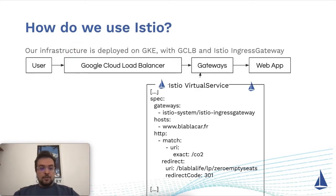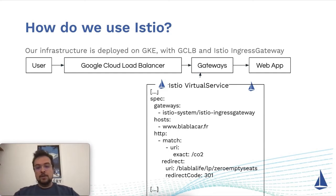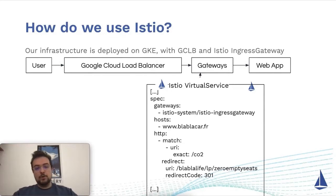In our example, how do we use Istio? We are deployed on GKE on Google Cloud, we use the Google Cloud load balancer globally and we have the Istio gateway and then our web application. So when the user makes a request to our domain, it will reach the Google Cloud load balancer and then our Istio gateways.